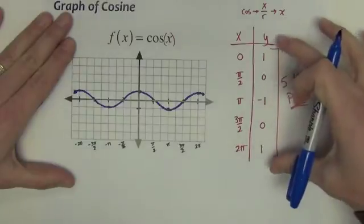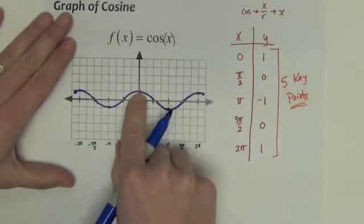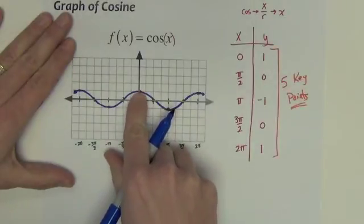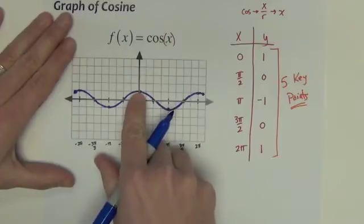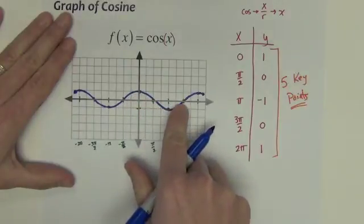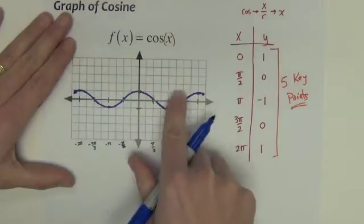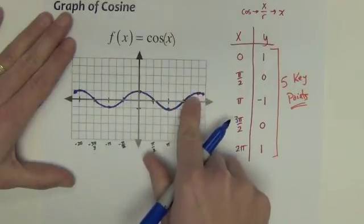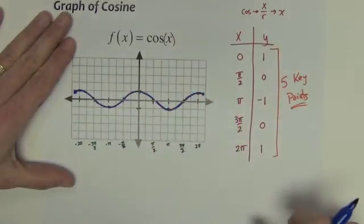So there's our cosine wave. Again, knowing these 5 key points, cosine starts at 1. So it starts off the origin. That's how it's a little different than the sine graph. So it starts up 1, then down to 0, down 1, back up to 0, back up 1. Those 5 point patterns, and then you just repeat, and it keeps on going.